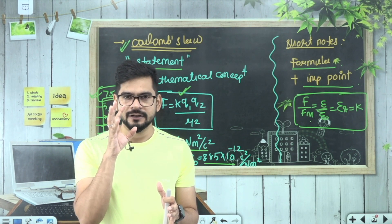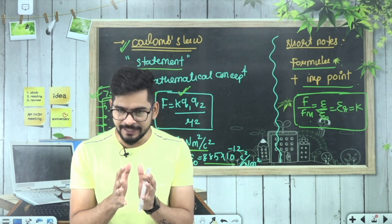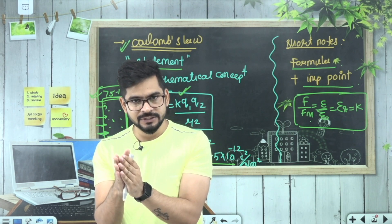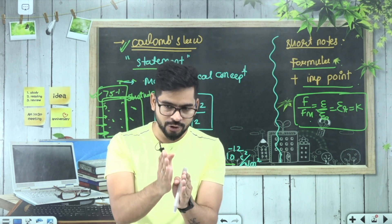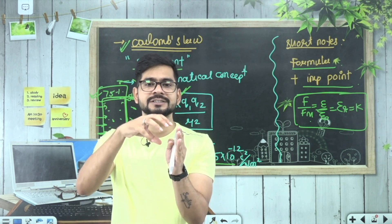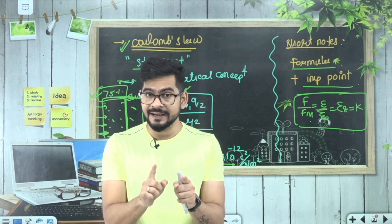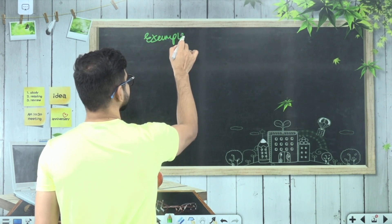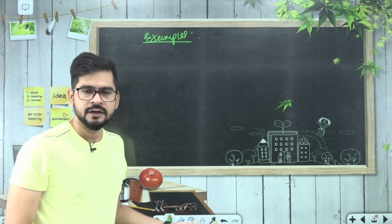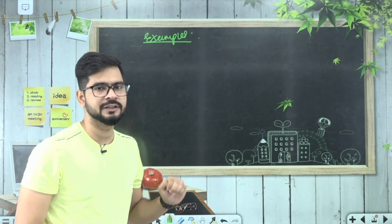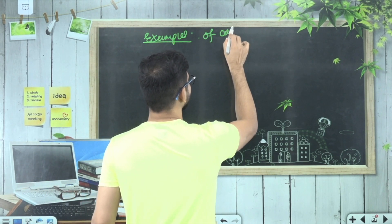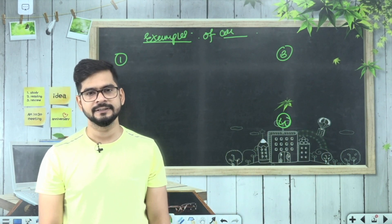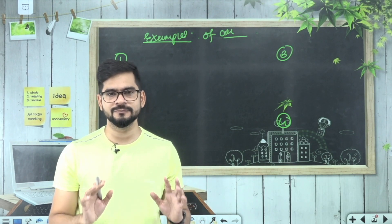So short notes banane ke liye ya derivation formula - isko karne ka tarika: ek teacher ko follow kar lijiye, NCERT ki line by line par nahi jaana hai. Ek page mein 75% hissa use kariye - us 75% hisse mein jo daily padhaya jata hai woh likh lijiye. Uske baad short notes bana lijiye - short notes mein kya hota hai: main main mathematical points, formulas, unki units, unki dimension formula. Aur jaisi hi aapka ek topic pura hota hai, aapko turant bachcha unke examples karne chahiye - kuch aapke live classes mein ho jata hai, kuch aap daily practice paper se karte ho, ya reference book se - jahaan se bhi padhte ho, turant yahaan par examples of Coulomb's Law likhke pahla, doosra, teesra, chautha example solve karo. Iski habit aapko daalni chahiye. This way you can get 100% full marks my dear student.